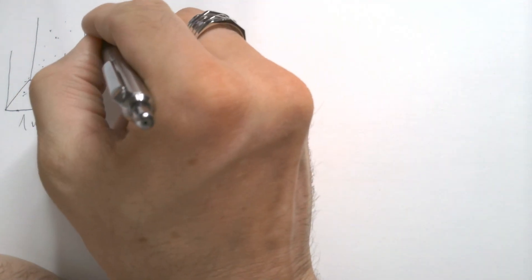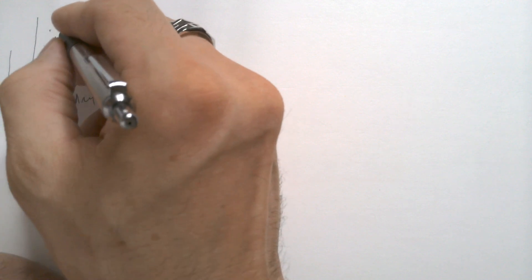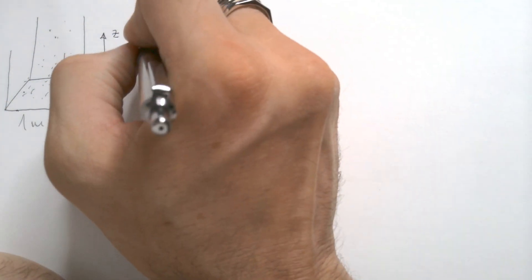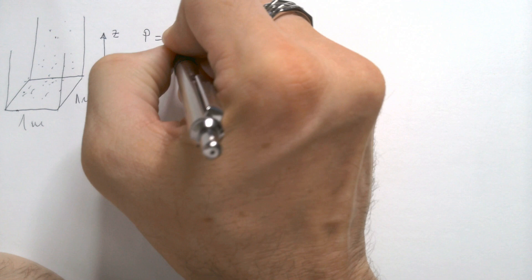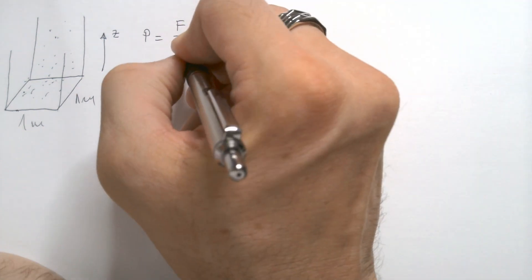This will be my z-axis height. Pressure exerted by this air on the surface is F over A. That's the definition of pressure. Force over an area.